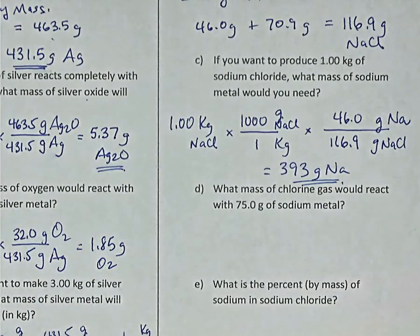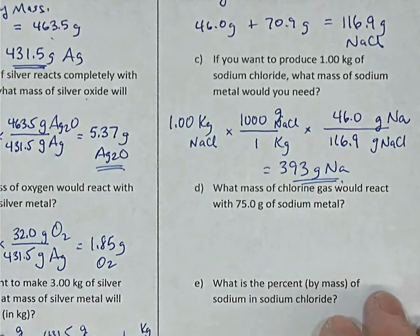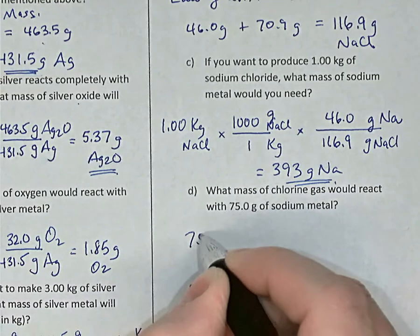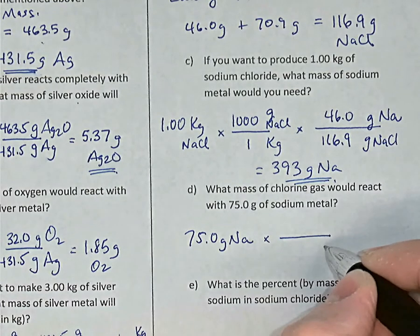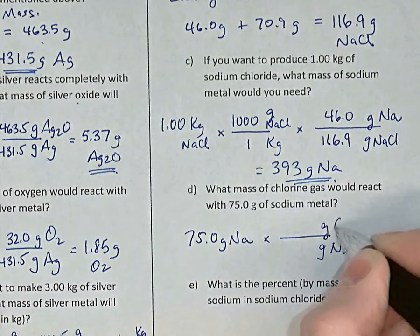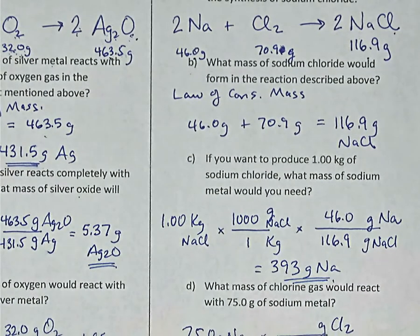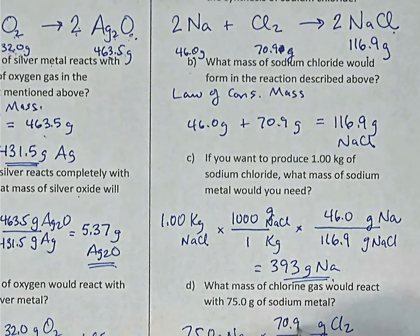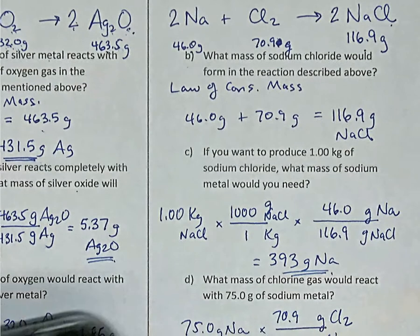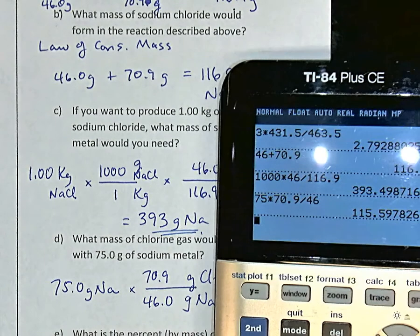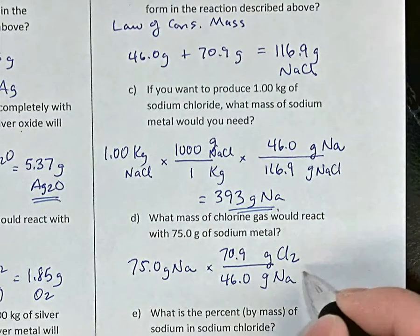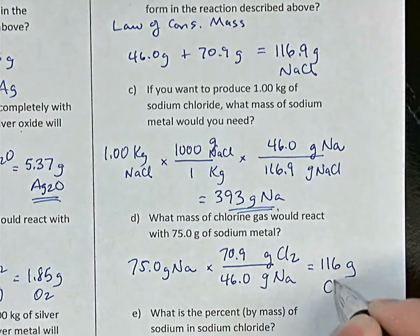Part D: what mass of chlorine gas will react with 75 grams of sodium metal? 75.0 grams of sodium — convert to grams of chlorine using the balanced equation: 70.9 grams of chlorine for every 46.0 grams of sodium. On the calculator: 75 × 70.9 ÷ 46, keeping three digits, gives 116 grams of chlorine gas.